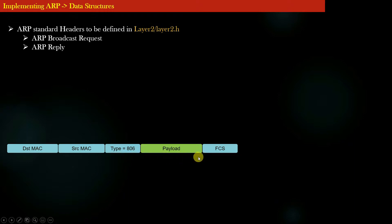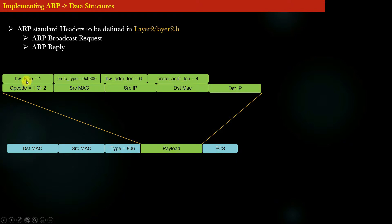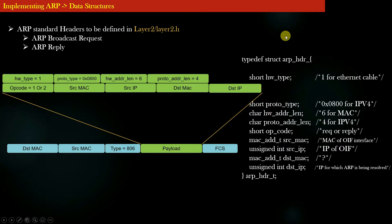The value 0x806 only indicates that the payload is an ARP message; it does not say whether it is an ARP broadcast request or an ARP reply. There is a separate field used to distinguish between these two types. Now let's enlarge how the payload part of the Ethernet header is structured — the green colored boxes show the formatted representation of an ARP message.